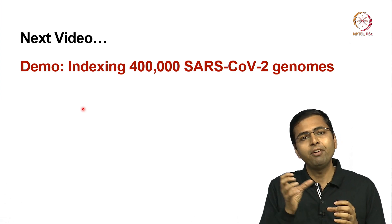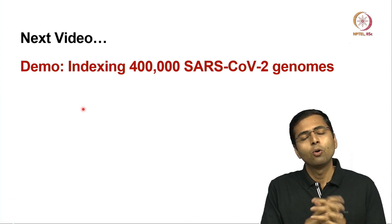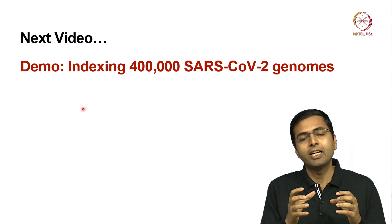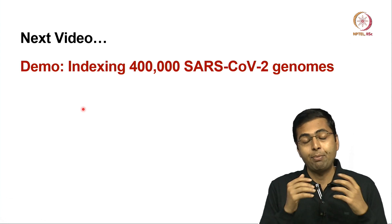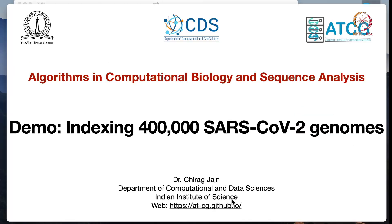This will be serving as a motivating factor for you to know what efficient algorithms are capable of in practice. I want to show you a demo of indexing 400,000 SARS-CoV-2 genomes. Let me first start with the motivation of why we need to index so many SARS-CoV-2 genomes.